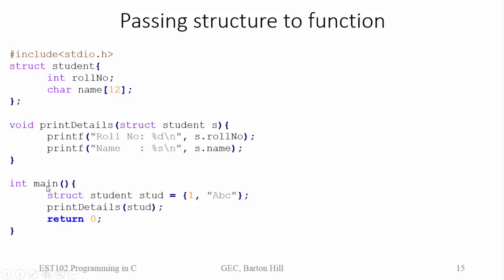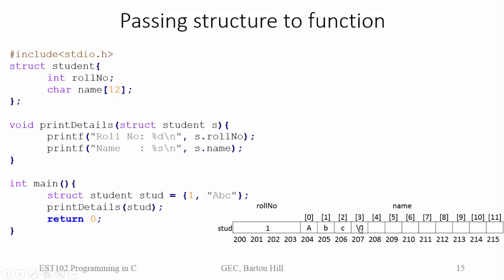Execution starts with main, then memory is allocated for the structure variable student and it is initialized with role number 1 and name 'abc'. After that, print_details is called with student as the argument, so control comes to the function. Here we are passing the structure variable using the method pass by value.